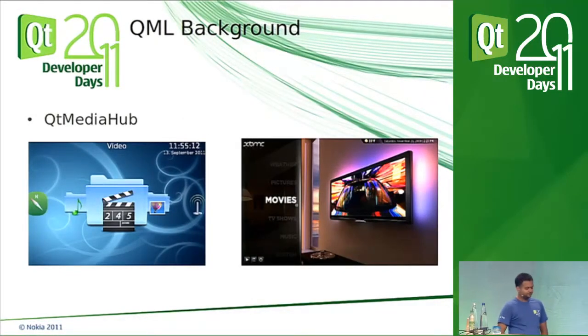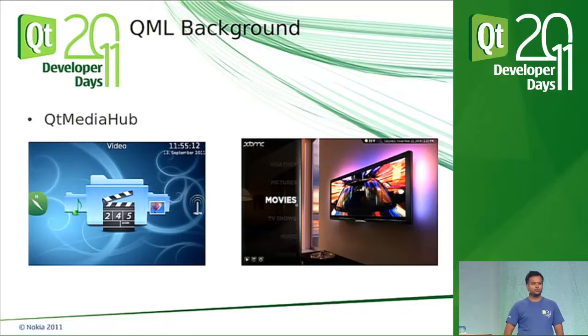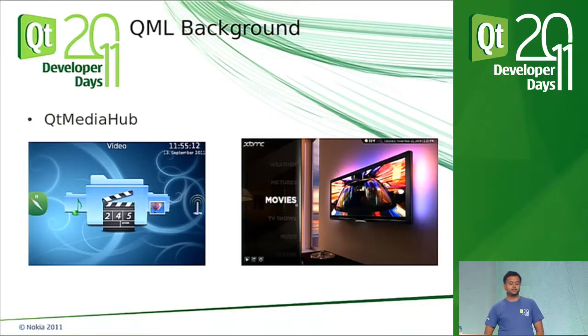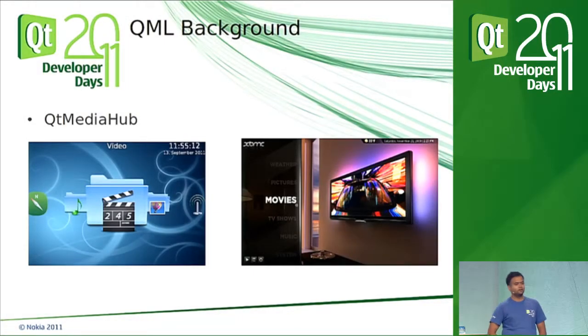I started studying QML about a year back, looking into small examples and demos. It was fairly nice with effects and transitions. I thought I should really see how QML scales to larger applications and how it performs. So along with two Nokia employees, Uranus and Donald, I started a project called Qt Media Hub — an open source project that is essentially a clone of XBMC, a media center where you can browse your videos, movies, and pictures. This talk covers everything I learned when developing Qt Media Hub.